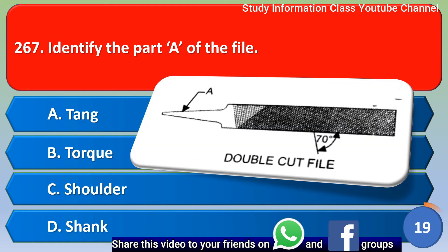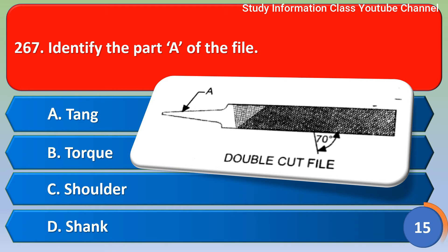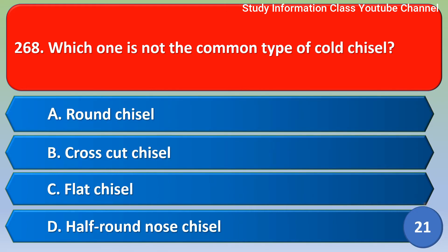Next question: identify part A of the file. Option A: tang, Option B: turk, Option C: shoulder, Option D: shank. The right answer is Option A, tang.